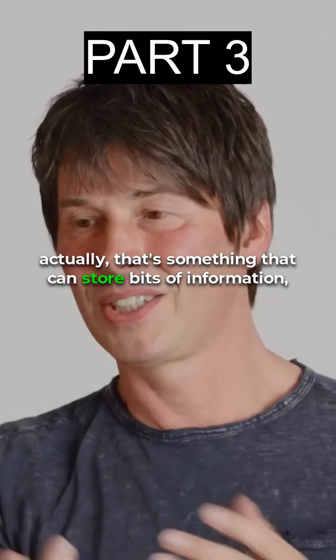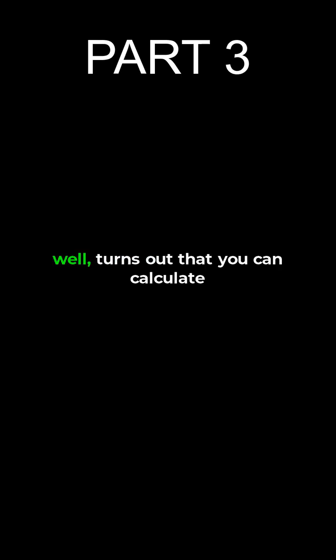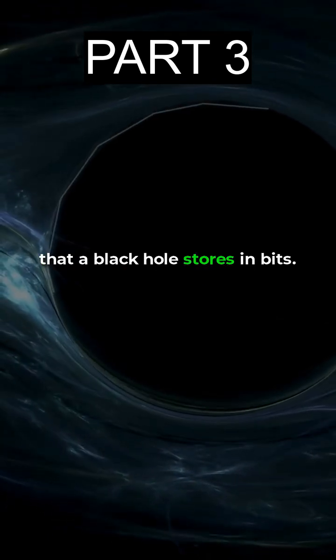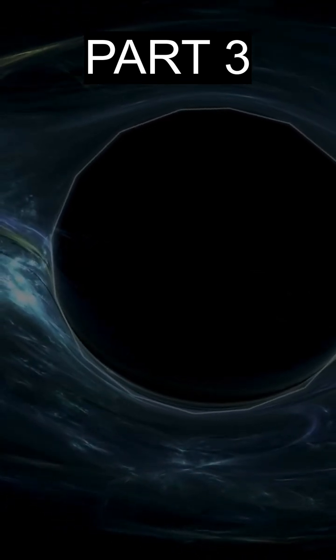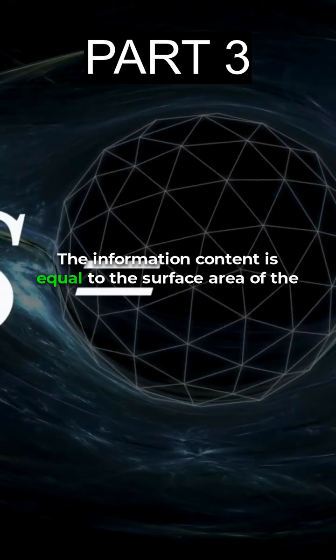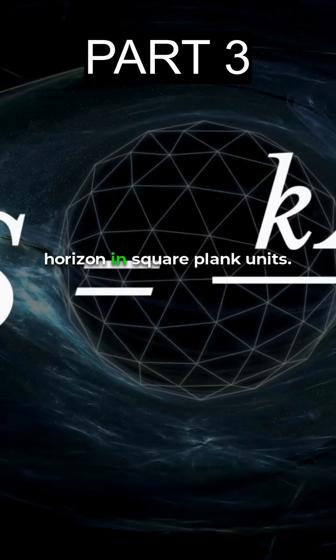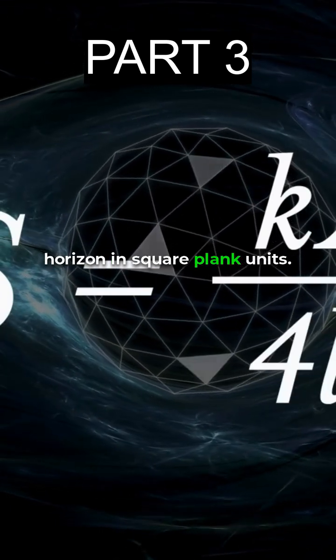You need atoms or something that can store bits of information. Well, it turns out that you can calculate that a black hole stores in bits the information content is equal to the surface area of the event horizon in square Planck units.